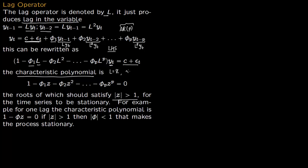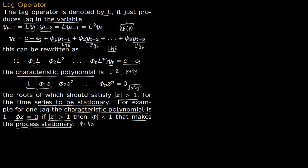For a complex number z = x + iy, where i = √(−1), the modulus is √(x² + y²), and this should be greater than 1 for the time series to be weakly (covariance) stationary. For example, in the AR(1) case the characteristic polynomial is 1 − φz = 0, giving φ = 1/z. So if |z| > 1, then |φ| < 1, which is the familiar stability condition for AR(1).